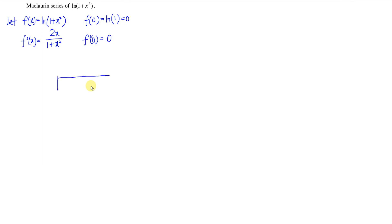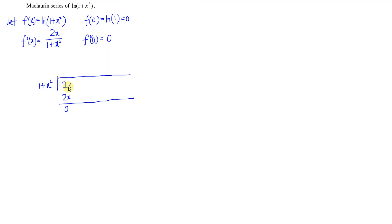So we have 2x divided by (1 + x²). When we apply the long division, the rule of thumb is that when we subtract the first term, it is always equal to 0. In order to have 0, we need 2x here, since 2x minus 2x gives 0. In order to have 2x, we multiply 1 by 2x. Don't forget the second term x²: 2 times 1 equals 2, and x¹ times x² gives x³, so we have 2x³.